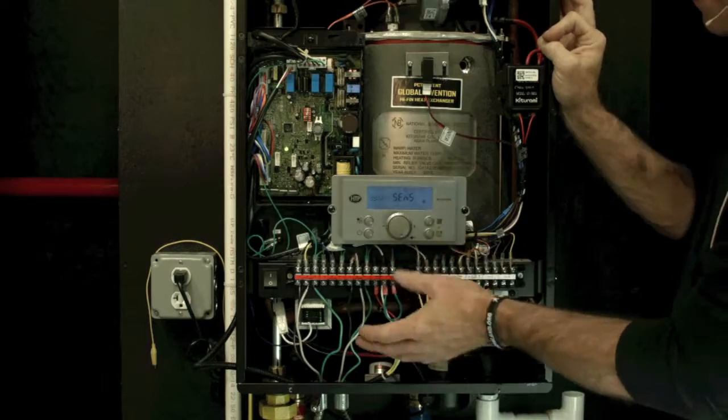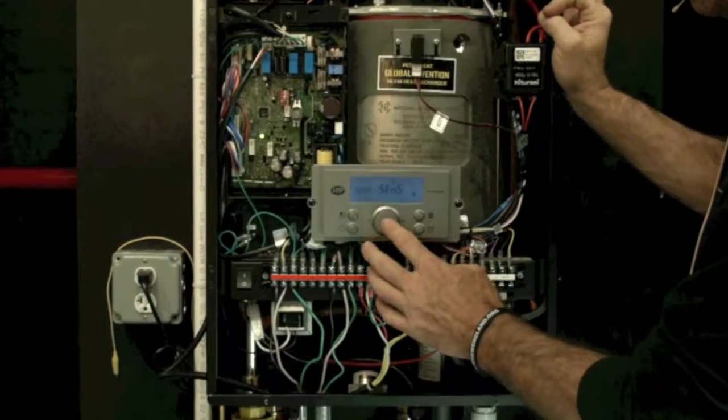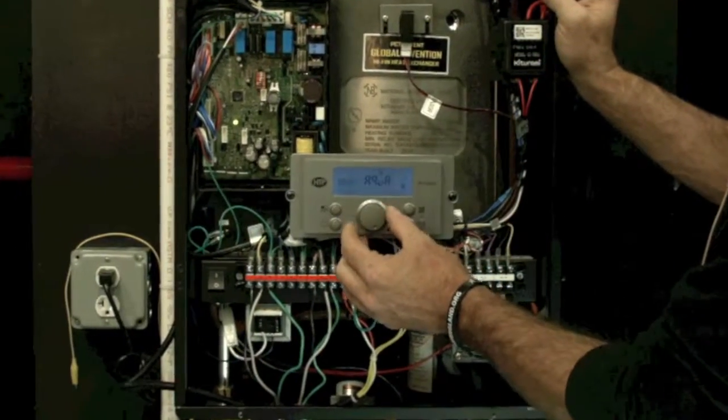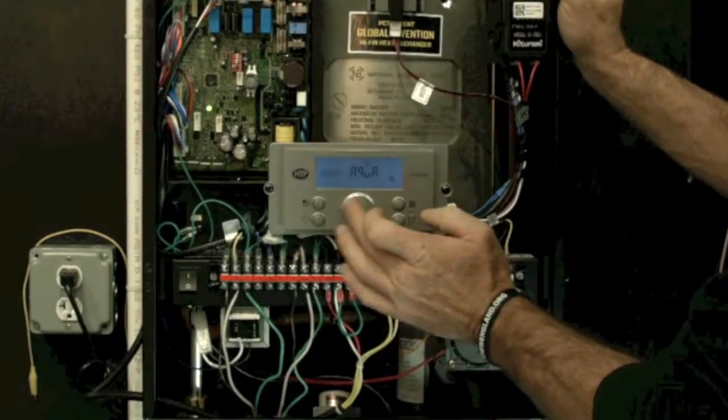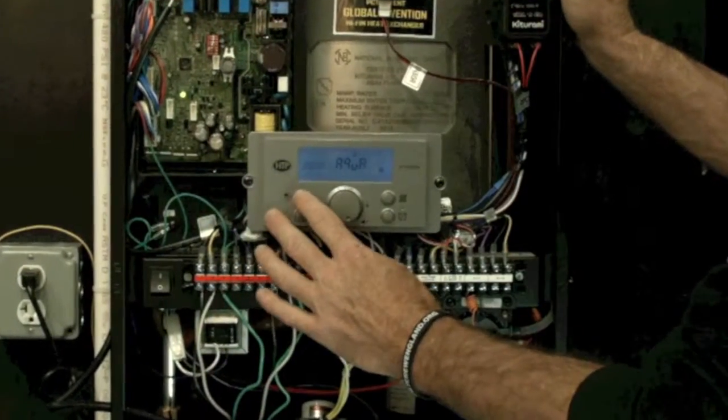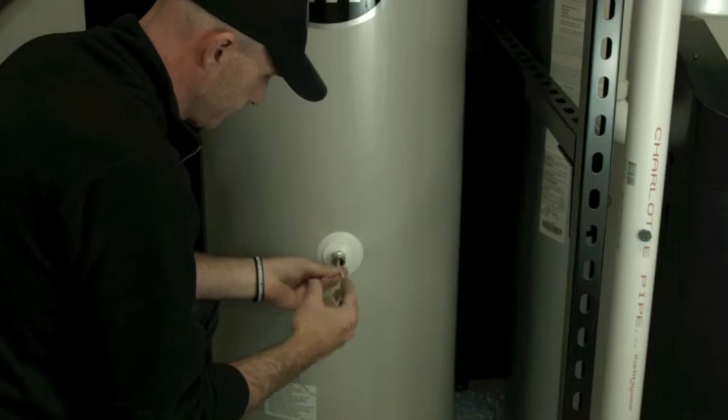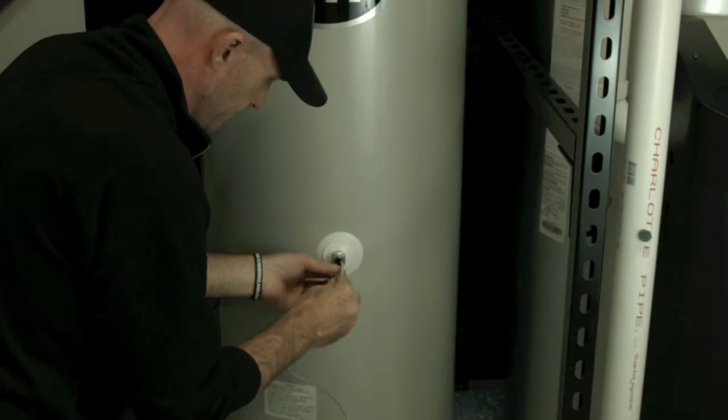This error will go away if an Aquastat is installed and parameter 39 is changed to Aquastat option and the boiler is powered off and then back on, or a defective DHW sensor is repaired or replaced.